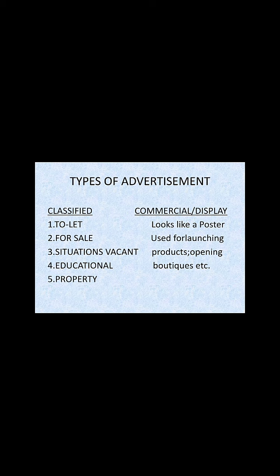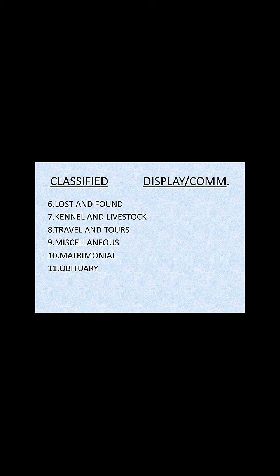Types of advertisements are classified and commercial or display. In classified, we have: to let, for sale, situations vacant, educational, and property. In commercial or display type of advertisement, it looks like a poster and is used for launching products, opening boutiques, etc. Classified advertisements also have lost and found columns, kennel and livestock, travel and tours, and miscellaneous.